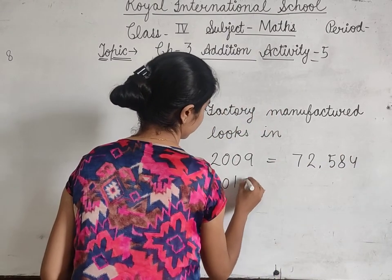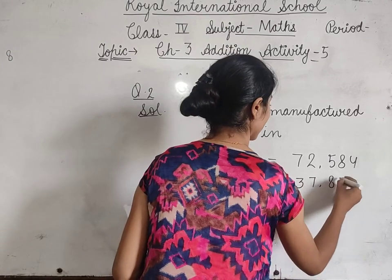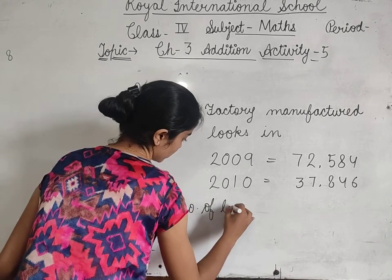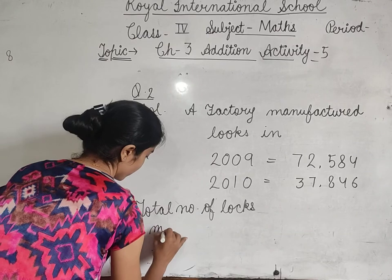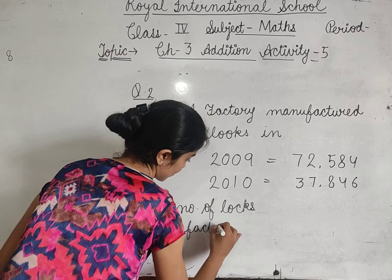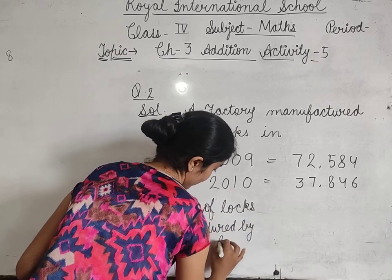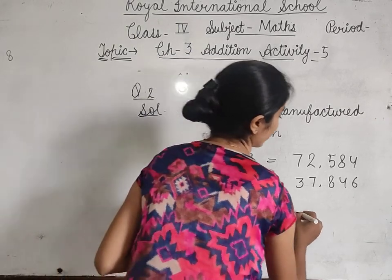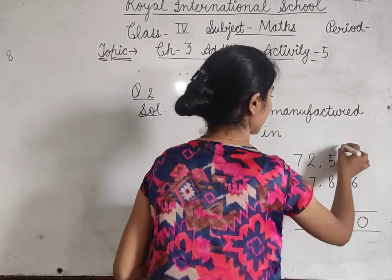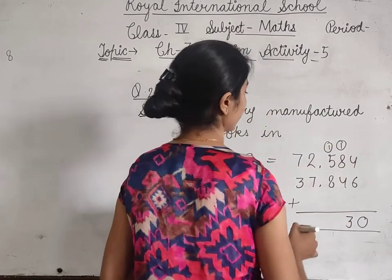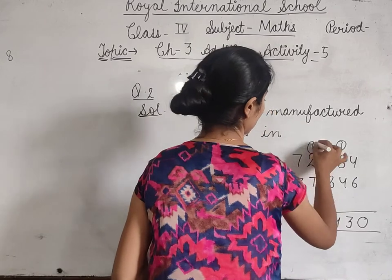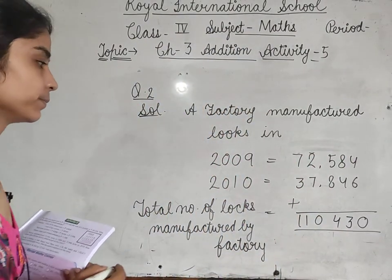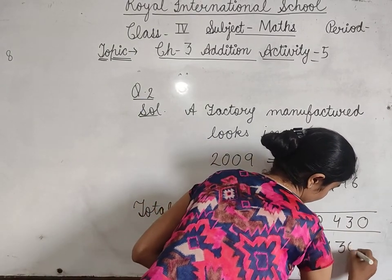Locks in 2010 equals 37,846. Total number of locks — इन दोनों को add कर देंगे। 4 plus 6 equals 10, 1 carry forwarded; 8 plus 4 equals 13 — wait, 9 plus 4 equals 13, 1 carry forwarded; 5 plus 8 equals 14, 1 carry forwarded; 1 carry forwarded; total equals 1,10,430 locks.